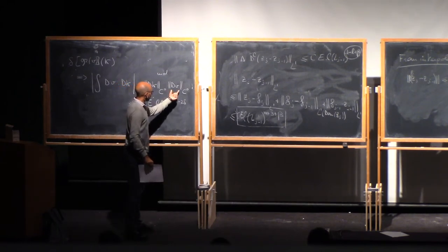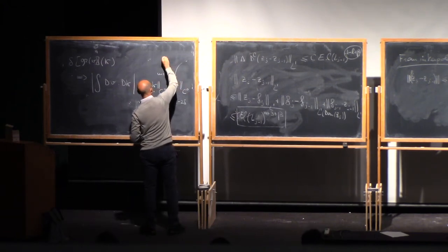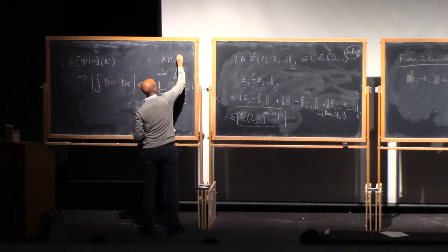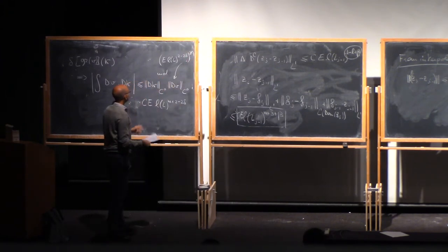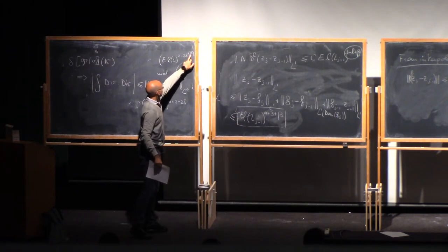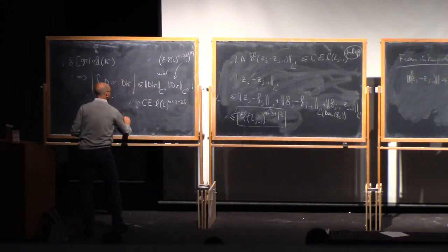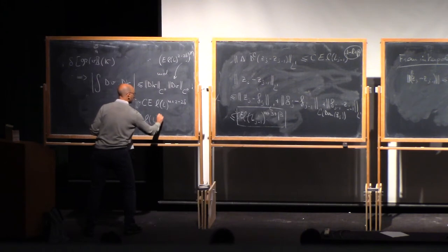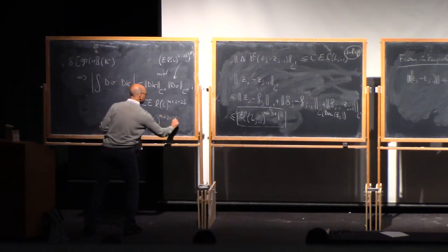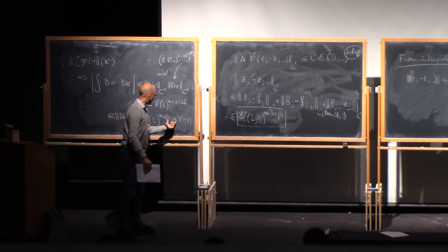This has a Lipschitz constant. The Lipschitz constant of this function is E·L(L)^{2−2δ} to the power gamma. I have gamma here and 1 there, so I can write it as less than or equal to dk in C0 times E times L(L)^{m+2−2δ·(1+gamma)}.